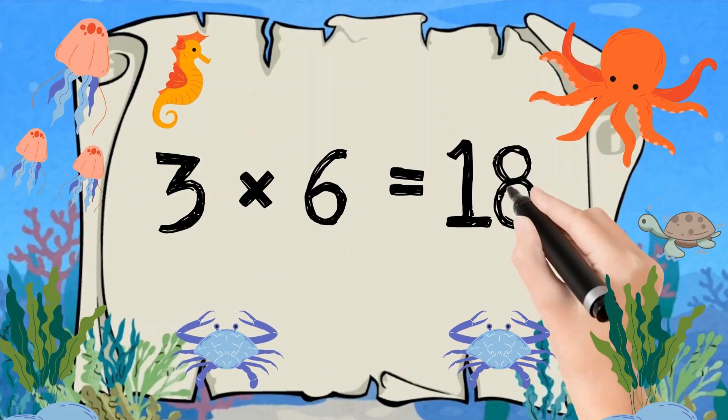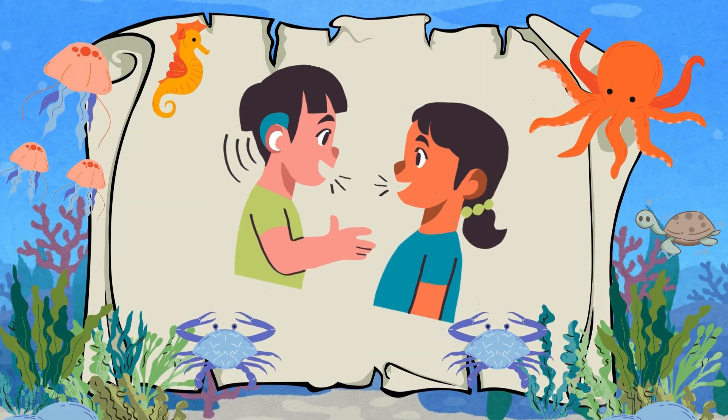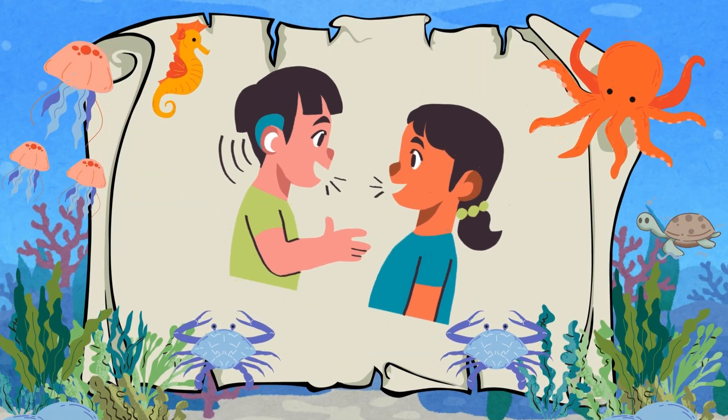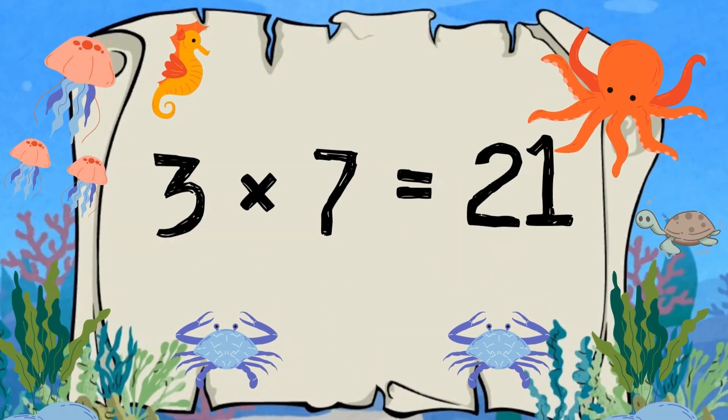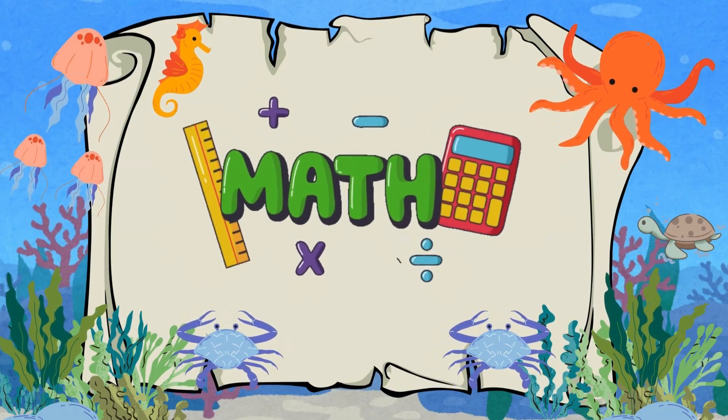Three times six is eighteen. Let's keep our voices keen! Three times seven is twenty-one. Math is easy, math is